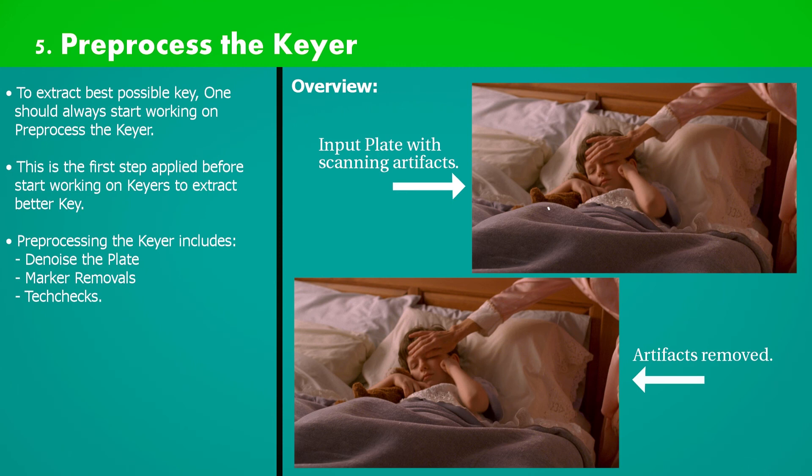Film negatives must be digitized using scanning process in order for further digital use. For example, the formats which we work on in Nuke like EXR, DPX, Cineon all come from scanning process.